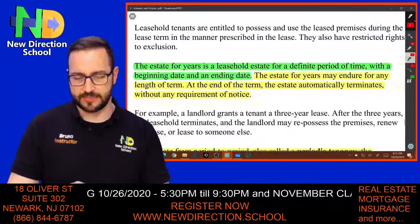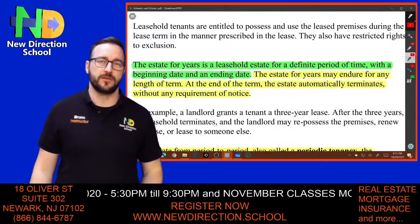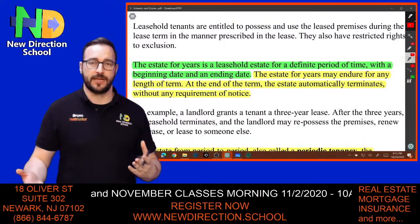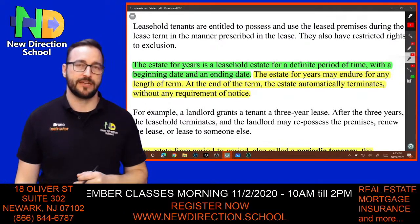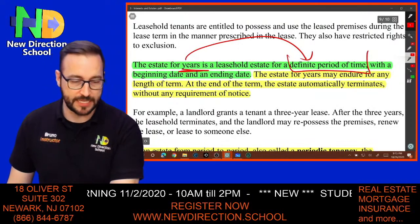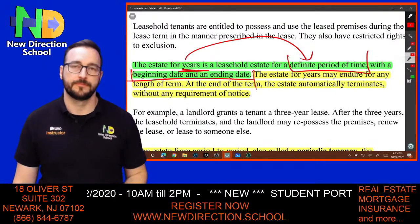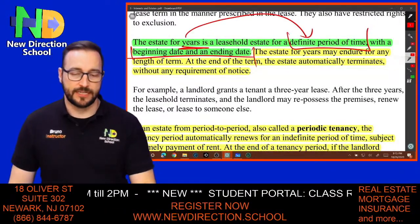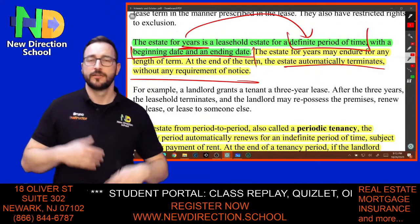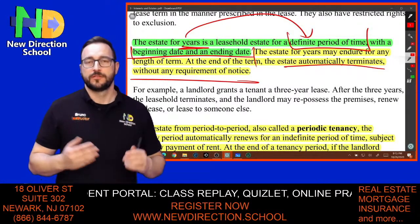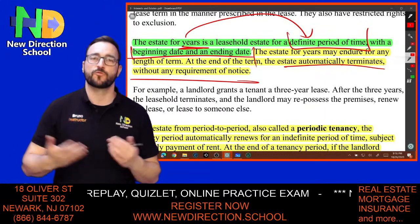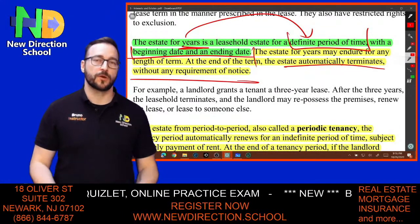Whatever's highlighted in green is most likely to appear on the exam; whatever's in yellow is something seen on the exam or important for real life. Estate for years: definite period of time with a beginning and end date. It automatically terminates without requirement of notice — like a hotel, they don't need to remind you of checkout because both parties already agreed to the date.